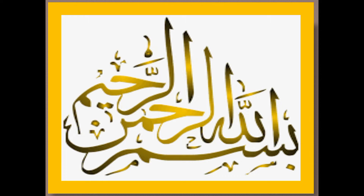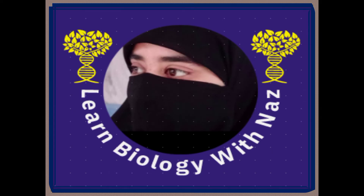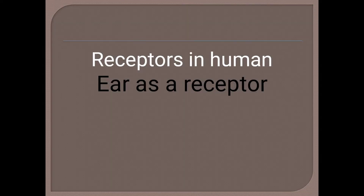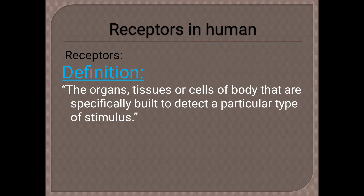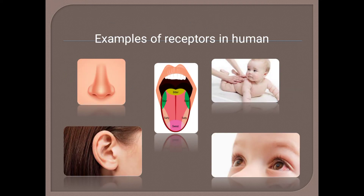Welcome back to my YouTube channel 'Learn Biology with Dance' with another interesting video — receptors in humans, with more emphasis on your organs as receptors. First of all, we must know what is meant by a receptor. The organs, tissues, or cells of the body that are specifically built to detect a particular type of stimuli are called receptors. Examples of receptors in humans include the nose, skin, tongue, ear, eyes, and some special glands.